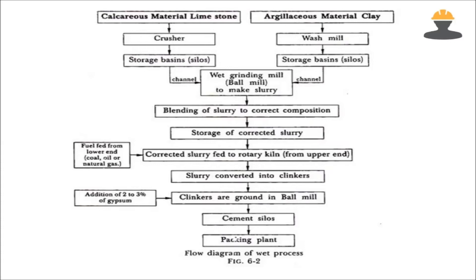The impurities will be removed — this is the first process. Here are two materials: carcass material. Wet grinding material, wet grinding mill. Mix the two materials. There are a lot of different materials. The first thing is to mix the limestone.